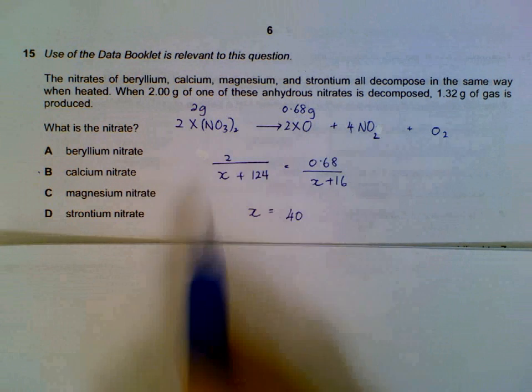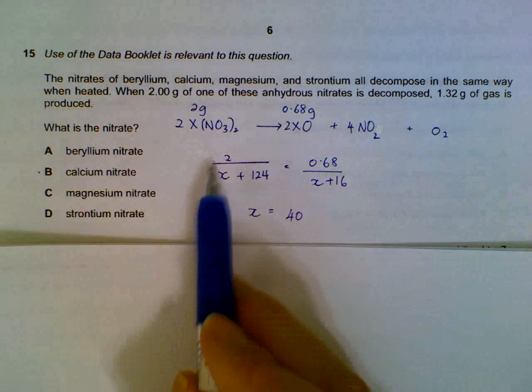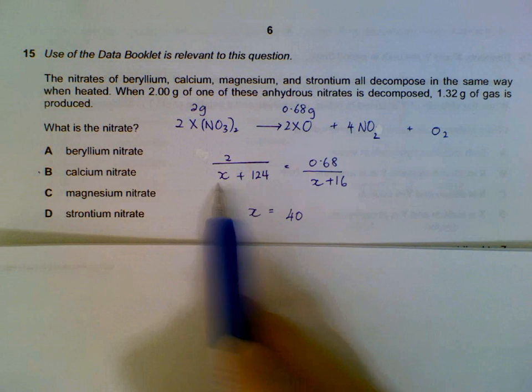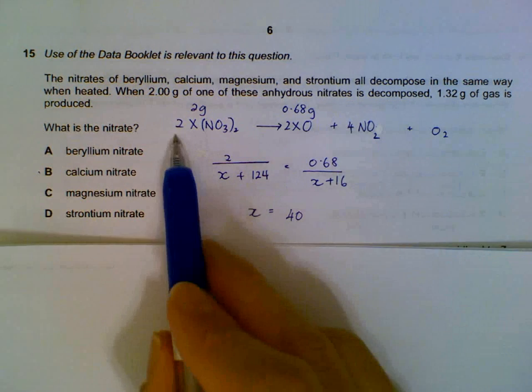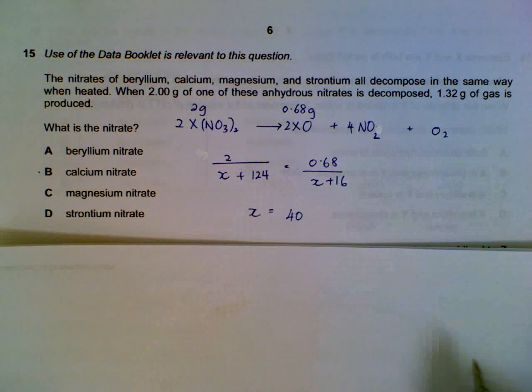Once we have these numbers, the mass of the oxides and the nitrates, we will convert them to moles. 2 divided by MR of nitrates, 0.68 divided by MR of oxides. And the important thing is they are the same ratio, so they will be the same number of moles.